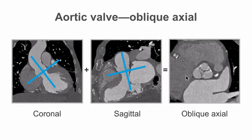By making these two simple movements, the aortic valve is revealed. In this image we can see that the aortic valve has three cusps, and there is some evidence of calcification at the cuspal margins.